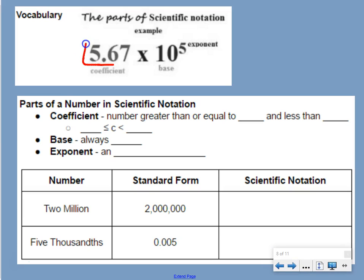The number piece is your coefficient — that's what we call it. Your coefficient is a number greater than or equal to 1 and less than 10. So if we write it as an inequality, our coefficient is between 1 and 10, where it can be equal to 1 but it cannot be equal to 10.